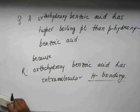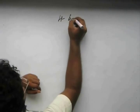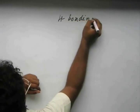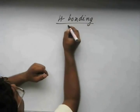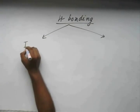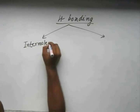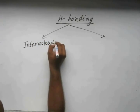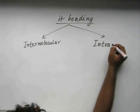Now, solving the question — let's see what happens. Hydrogen bonding can be subdivided into two parts: intermolecular hydrogen bonding and intramolecular hydrogen bonding.